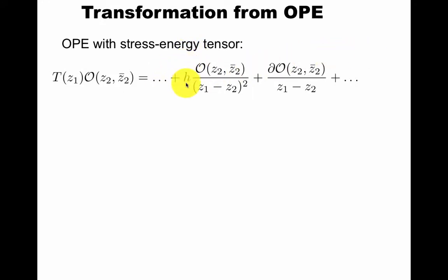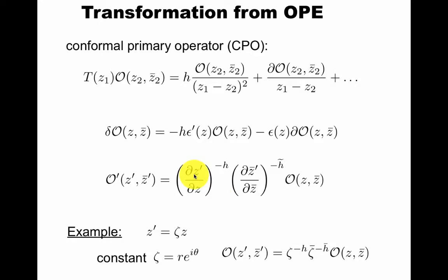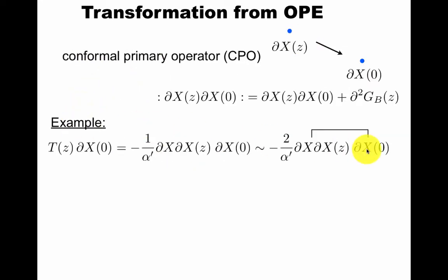You can keep going with this: t times some operator is a bunch of singular terms plus higher order terms. You'll see in a moment how to extract this coefficient h. Let's first define a conformal primary operator is one that doesn't have these extra singular terms here. You can compute the transformation of this operator under application of this t. This is the infinitesimal version of a conformal transformation where the operator has weight h. An example is if z prime is a complex number times z, then this is just rescaling by r and rotation by theta.